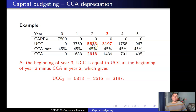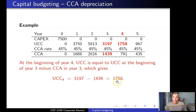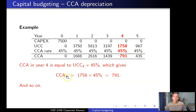At the beginning of year 3, UCC is $5,813 minus $2,616, which equals $3,197. Applying 45% to $3,197 gives a depreciation expense of $1,439. We continue this pattern: subtract each year's CCA from the prior UCC to get the next year's UCC. This yields a CCA of $791 for year 4, and so on.